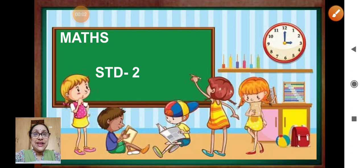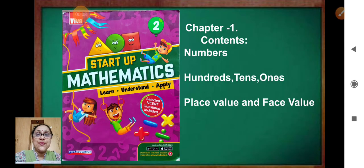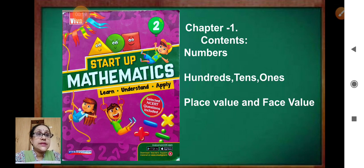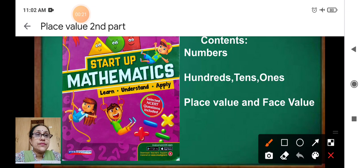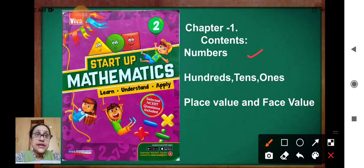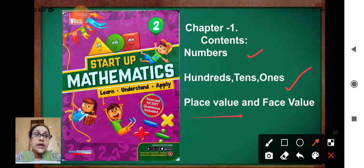Sairam children, welcome back to our maths class. Second standard children, get ready with your maths book and pencil box. Today we will continue with chapter 1. We have finished numbers, hundreds, tens, ones, and today we will be doing place value and face value.